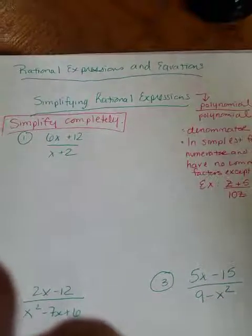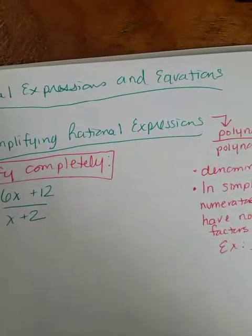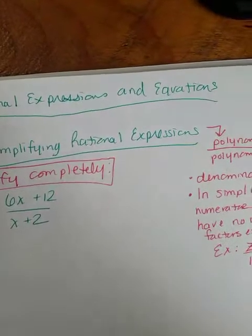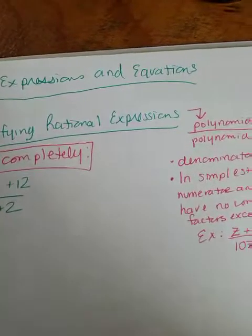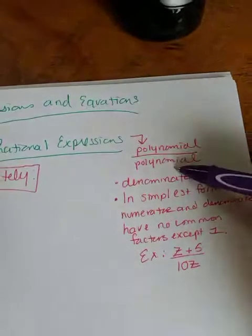Remember what the word rational means when we talked about number groups like whole numbers, integers, rational, irrational. If you remember what a rational number is, it's a number that can be written as a fraction. So if we're looking at rational expressions, it's a polynomial divided by a polynomial.